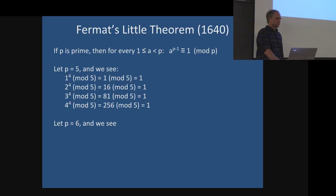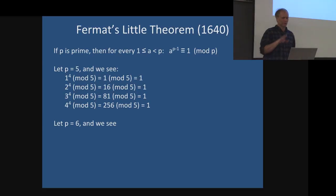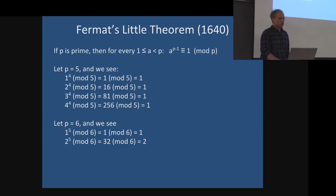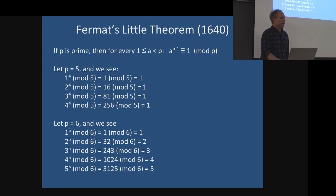What if P is not prime? The theorem says nothing about that case. Let's take P=6: 1^5 mod 6 = 1 — not surprising, 1 to any power is 1. But 2^5 mod 6 = 2; 3^5 mod 6 = 3; 4^5 mod 6 = 4; 5^5 mod 6 = 5. So we got non-1s there. We always get 1 for A=1, so forget about that. But we got non-1 results for the others.